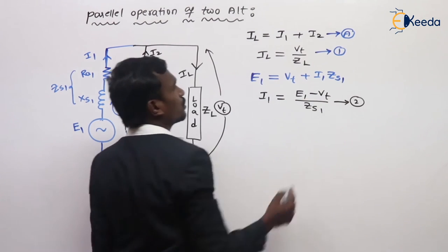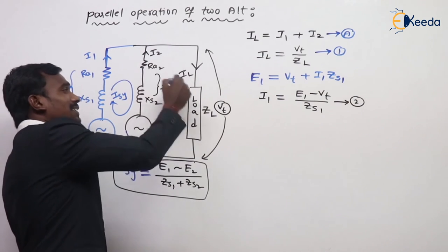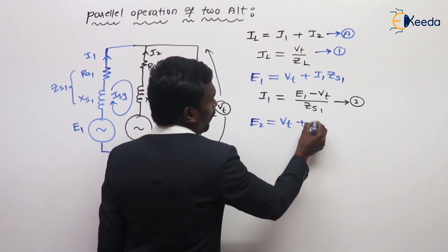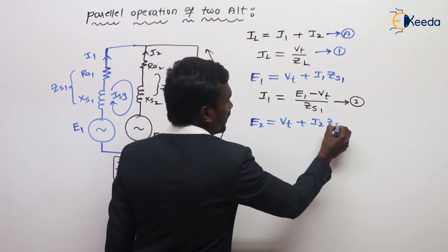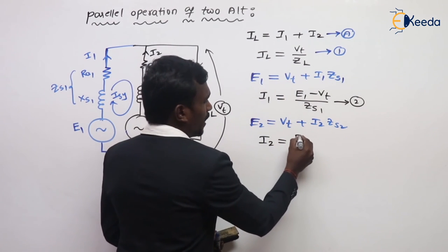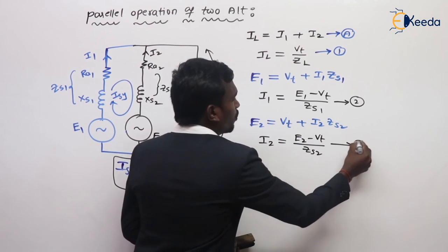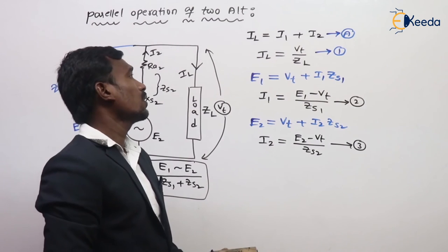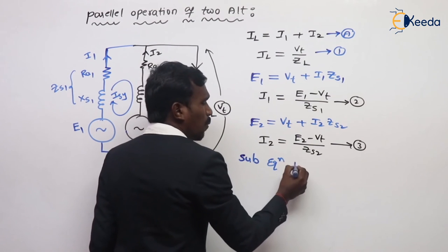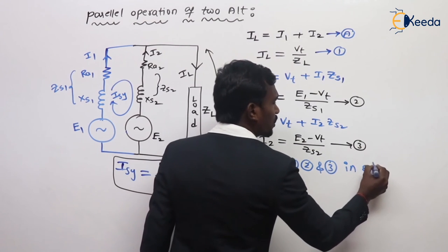The loop equation for the second alternator: E2 = VT + I2·ZS2. Therefore I2 = (E2 - VT) / ZS2 — equation 3. Now substitute equations 1, 2, and 3 into equation A to find the terminal voltage VT.